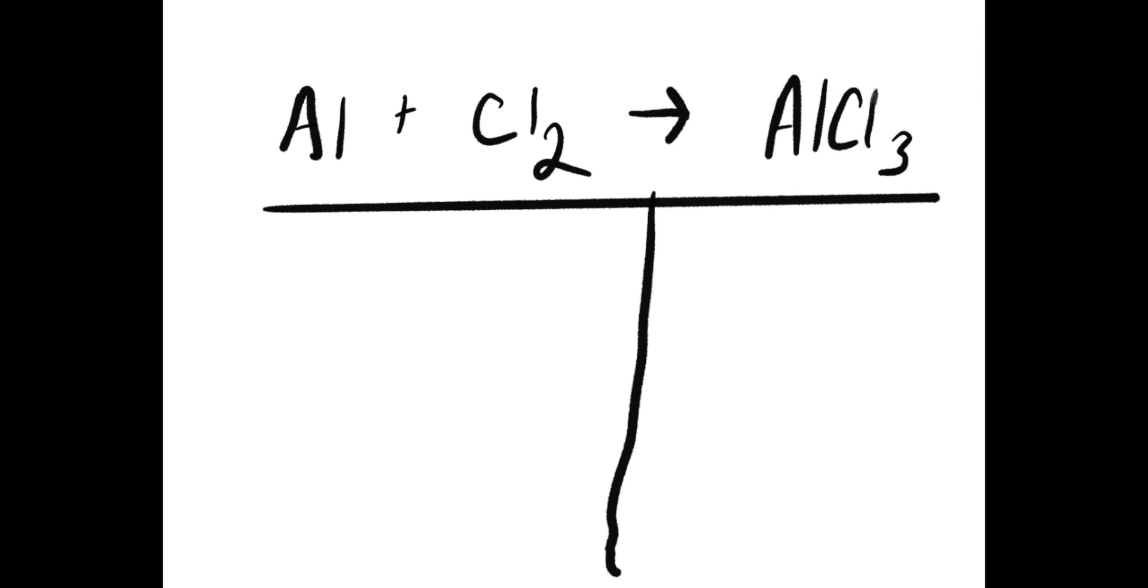So for this equation, we are going to talk about the synthesis of aluminum chloride. This is going to be aluminum Al plus chlorine Cl2 is going to give you aluminum chloride AlCl3. So my first step after writing an unbalanced equation is to draw out my chart.